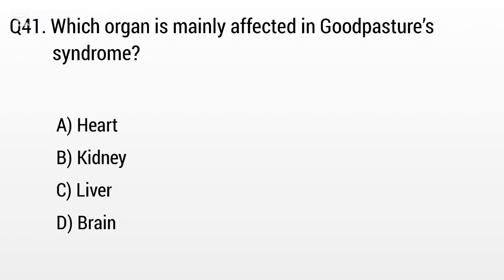Question 41. Which organ is mainly affected in Goodpasture syndrome? The right answer is Option B: Kidney.